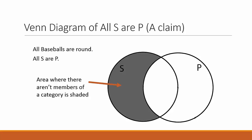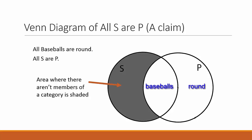In a universal affirmative claim, such as all baseballs are round, the subject is baseballs and the predicate is round. We might rephrase it as all things that are baseballs are also things that are round. In Venn diagrams, the part of the circle where there are no members of that category is shaded. So in this case, the left side of the circle is shaded. The center area represents all baseballs, and they are part of the category of round things.